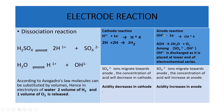OH- will lose one electron and form OH, which will be converted into water and oxygen. They can ask the question: name the gases released at the cathode and anode during the electrolysis of acidified water. At the cathode, hydrogen gas is released. At the anode, oxygen gas is released.